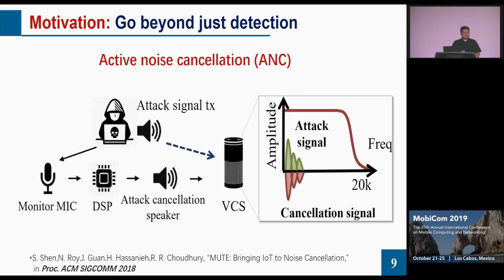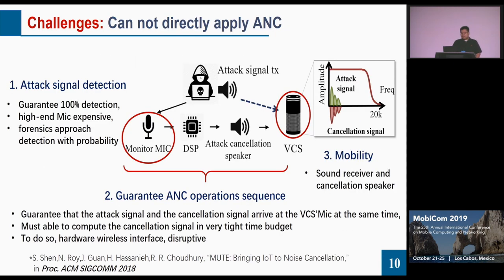An ideal solution is that the VCS creates an exact opposite of the attack signal as a cancellation signal, so that the legitimate command is executed while the attack signal is cancelled. This idea is motivated by the active noise cancellation (ANC) mechanism. ANC is used in headphones for cancelling environmental noise — but if it can actively cancel noise, why not actively cancel the attack signal? However, when we apply such architecture to this scenario, we face several technical challenges.